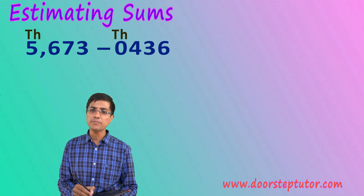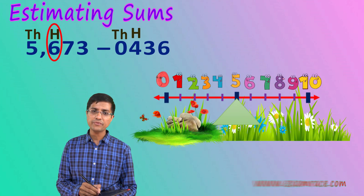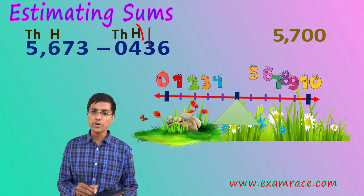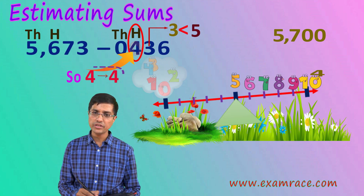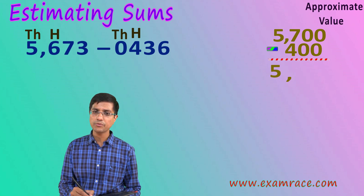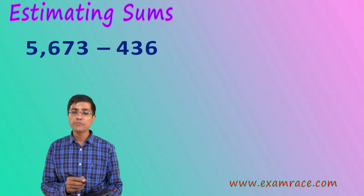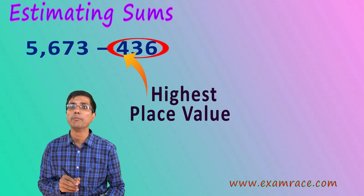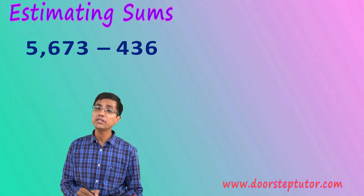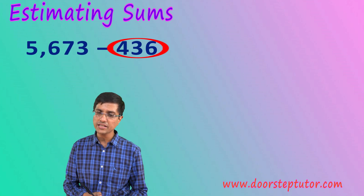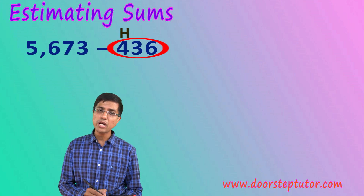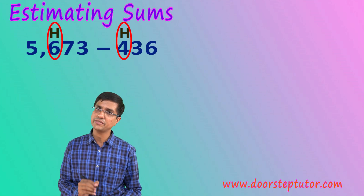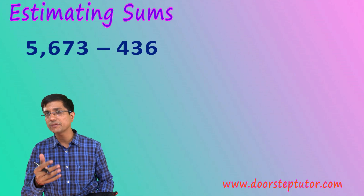What would be a good estimate? If I round these numbers to the nearest hundreds, this 6 becomes a 7 because there is a 7 in the tens place — 7 is more than 5. And this 4 remains as such because 3 is less than 5, so this becomes 400. This is actually a good estimate. The rule when estimating sums and differences is to always take the place value of the lowest number and round everything to it. Here 436 is the lowest number, whose place value is hundreds, so I round everything to hundreds for a good compromise between accuracy and speed.